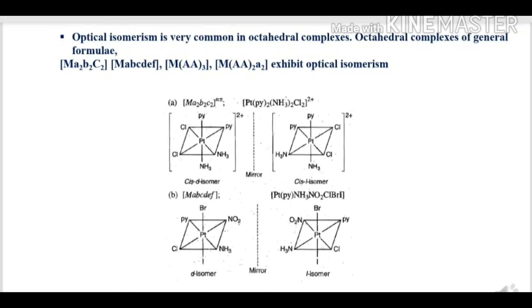Optical isomerism is very common in octahedral complexes. The general formulae MA2B2C2, MABCDF, MAA3, and MAA2B2 can exhibit optical isomers. For example, in MA2B2C2 — where A2 represents two chloro ligands, B2 two pyridine ligands, and C2 two amine ligands — this gives cis-dextro and cis-levo isomers. Dextro means the compound rotates polarized light to the right, and levo means it rotates polarized light to the left.